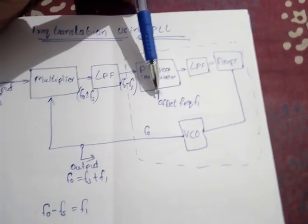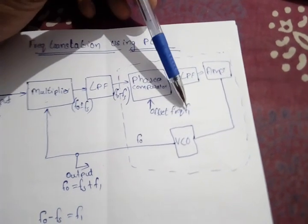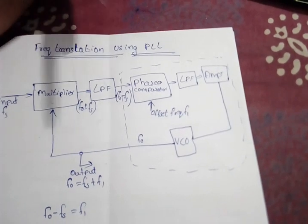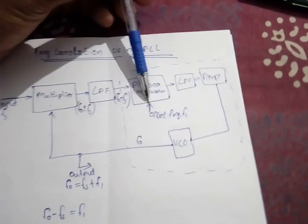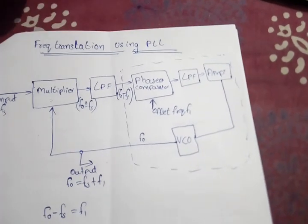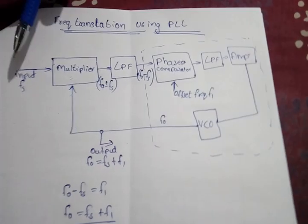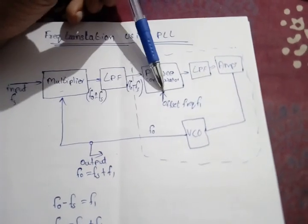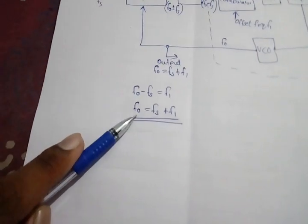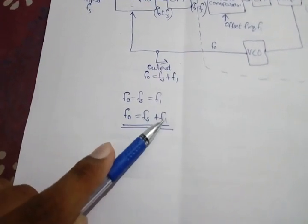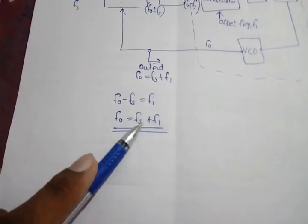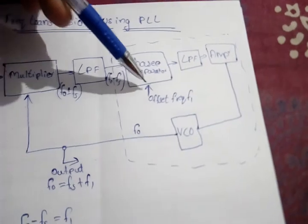The other input of the phase comparator is the offset frequency F1. This is the frequency we have to give as the offset — that is, how much amount we have to change from the input frequency, that amount we give as the offset frequency to the phase comparator.